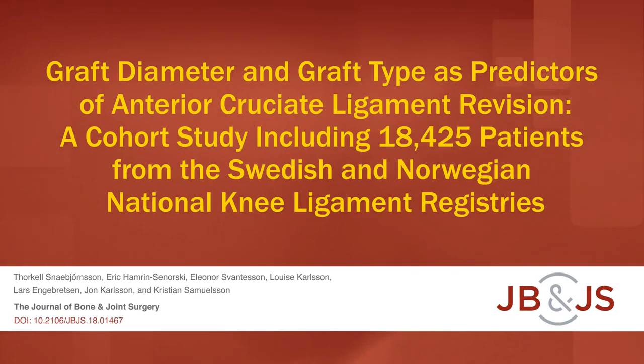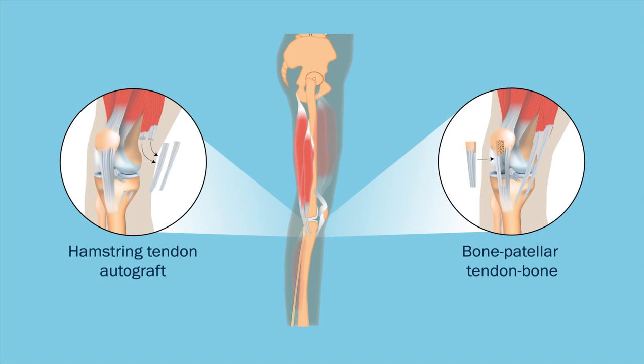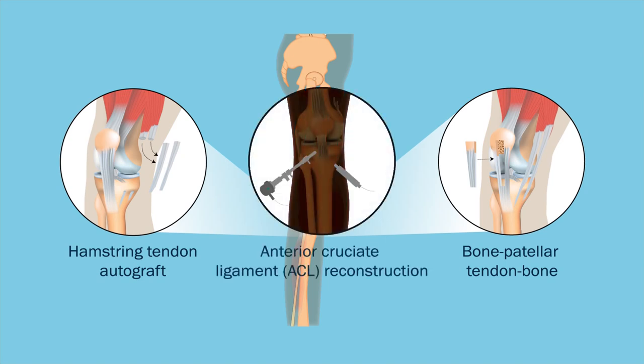This is an audio-visual representation of a study published in the Journal of Bone and Joint Surgery in 2019. Hamstring tendon and patellar tendon autografts are both commonly used in anterior cruciate ligament or ACL reconstruction.